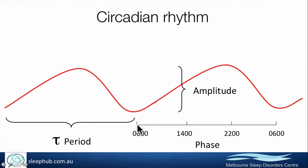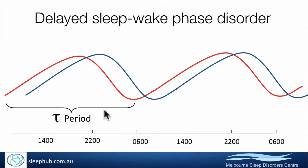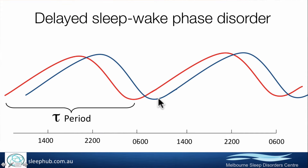Phase disorders are where someone's intrinsic rhythm is out of sync with the outside world. The most common is delayed sleep-wake phase disorder, where someone's intrinsic body clock is running at a later time than where they're living. Most commonly seen in adolescence — for school reasons parents may want them going to bed at 10 and waking at 7, but really they're not going to sleep until 1 and waking up at 10. Left to their own devices on holidays, they feel fine — it's just a three-hour offset.